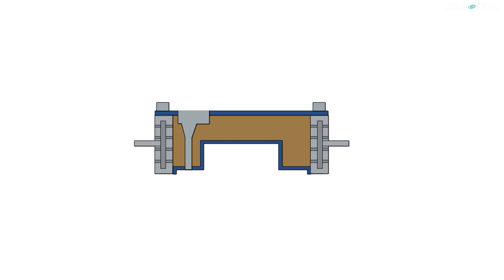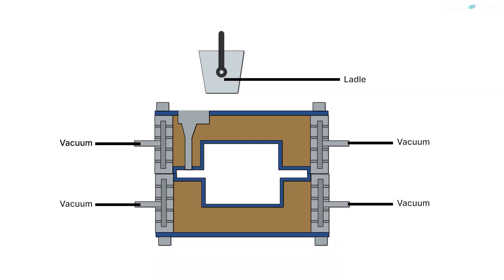In this way, both halves of the mold are made which are then assembled for the casting process. As the molten metal is poured, the mold is kept under vacuum.